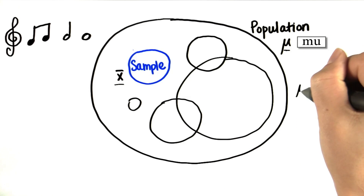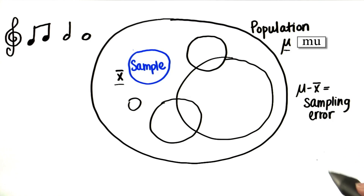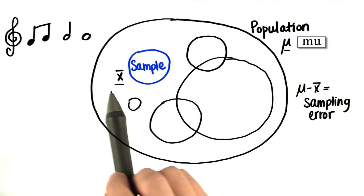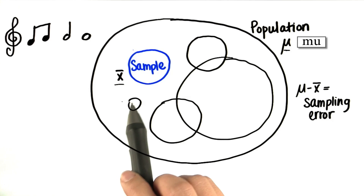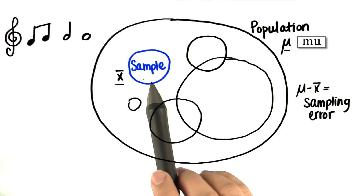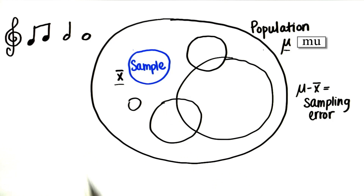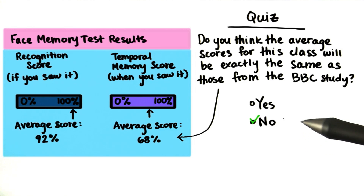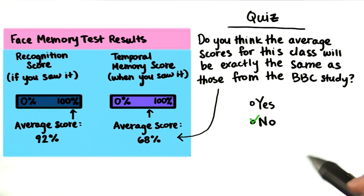The difference between these two is called the sampling error, which means we can make educated guesses about population parameters using sample statistics, but we probably won't be 100% accurate. That's why it's really important to have a good sample that can better predict the population parameter. So going back to the quiz — no, we don't think that the average scores for this class will be exactly the same, but it'll probably come close, and we're going to be able to see that later.